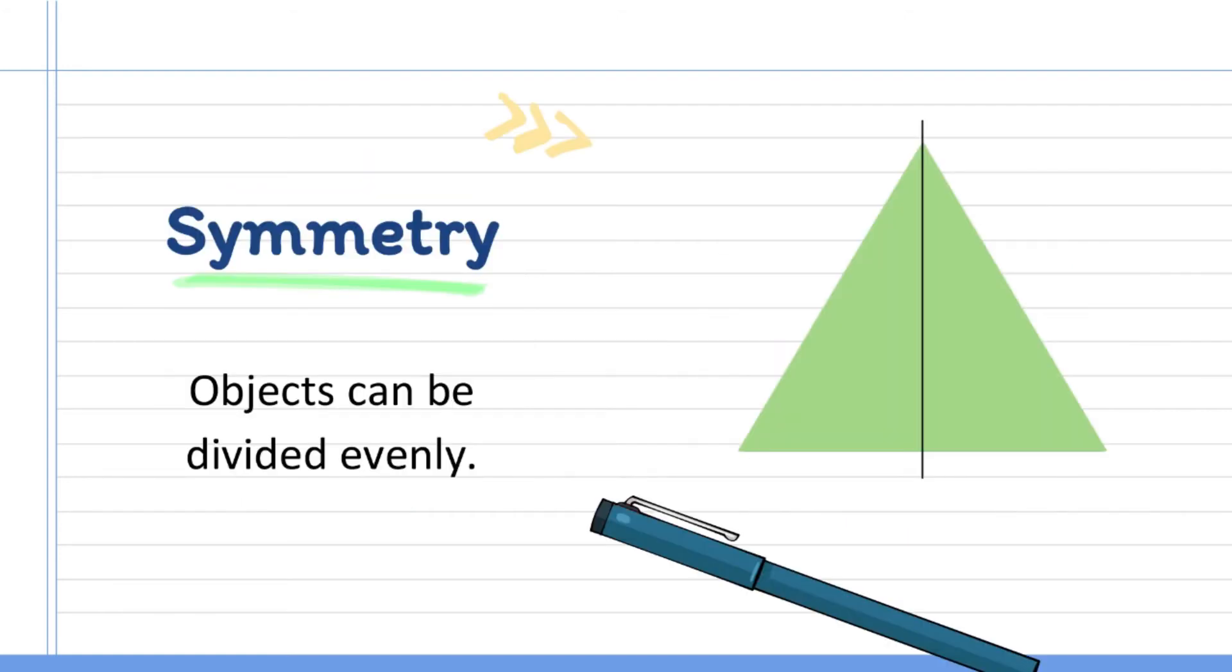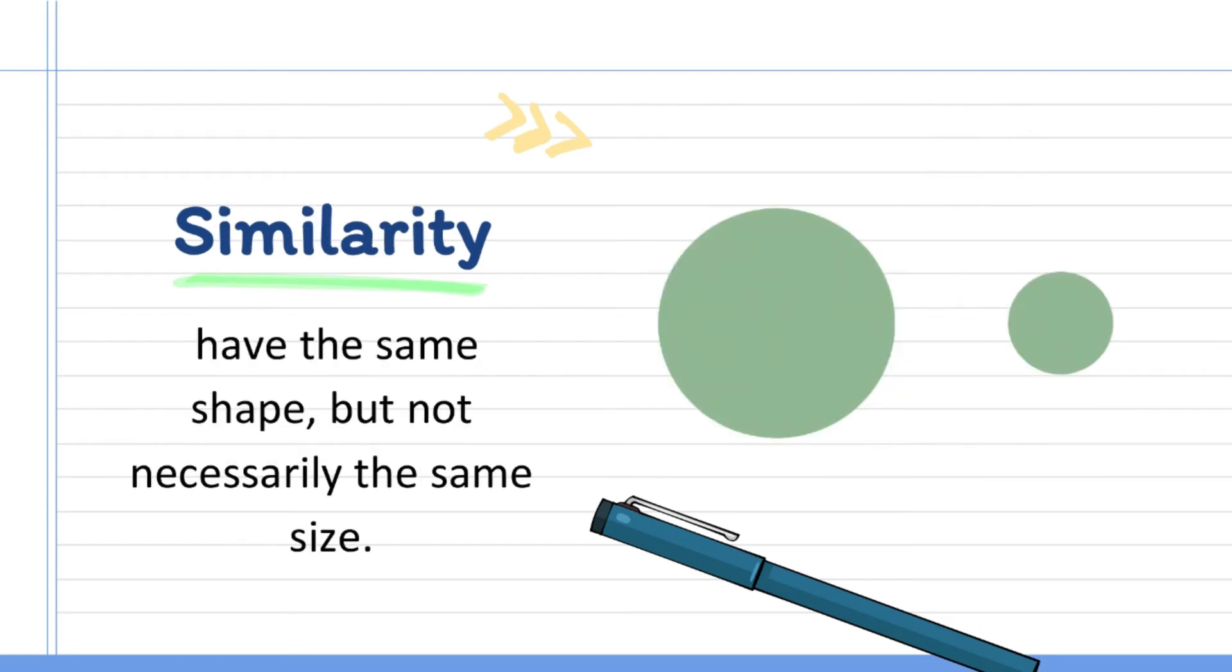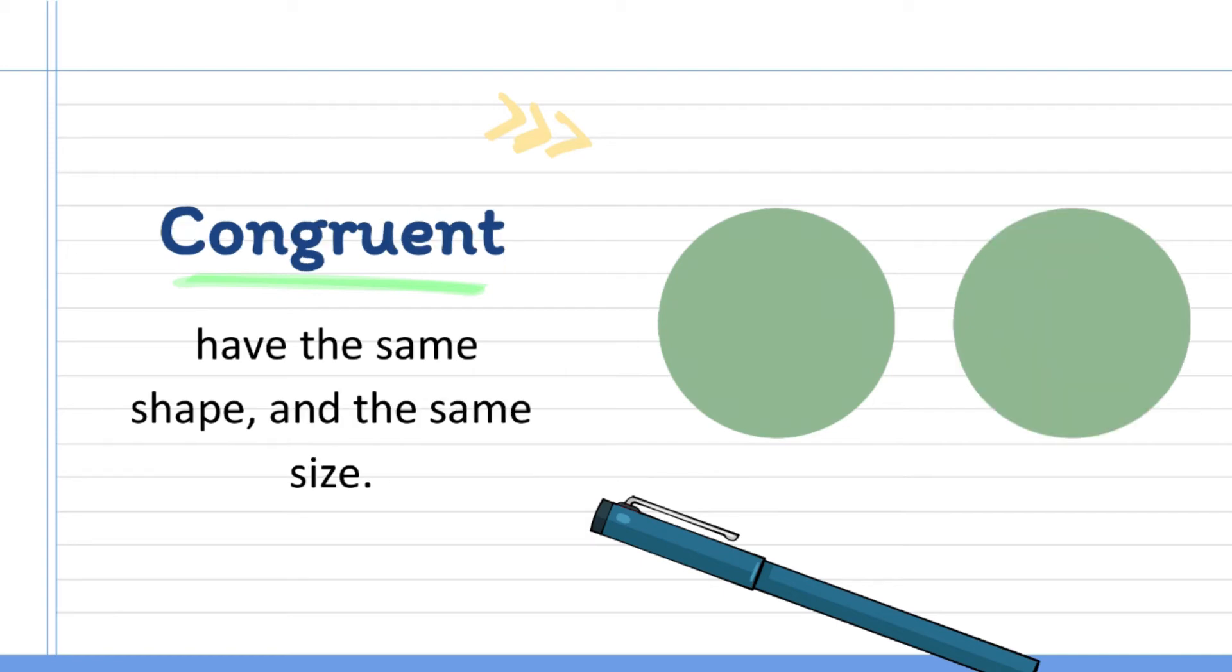So that is the difference between symmetry, similarity, and congruent. Symmetry is when you have an object that can be halved or divided into two equal size and shape. While similarity is when you have two objects with the same shape but the size is different. And congruent is when you have two objects with the same shape and the same size.